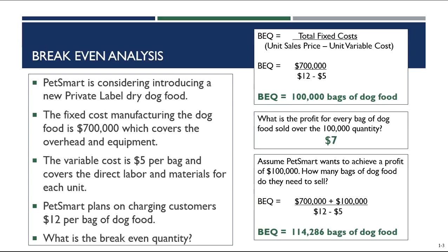One thing to note about the breakeven quantity: always round up. Can you sell half a bag of dog food or 0.2 bags of dog food? No. So always round to the nearest whole number when calculating your breakeven quantities.